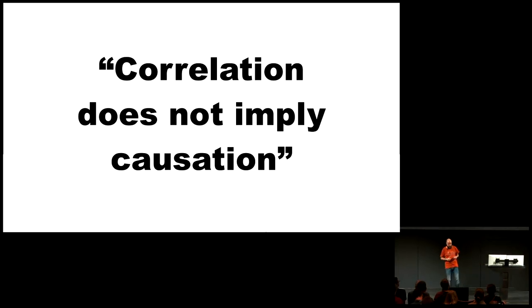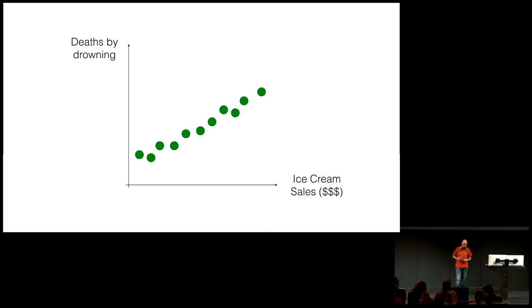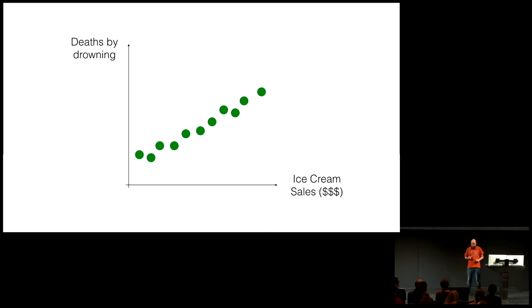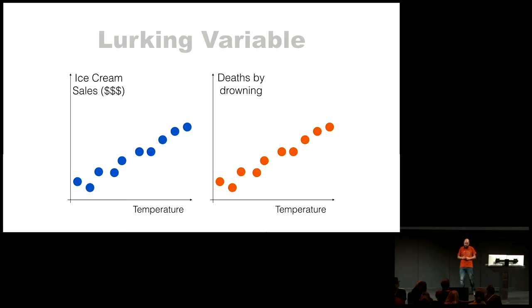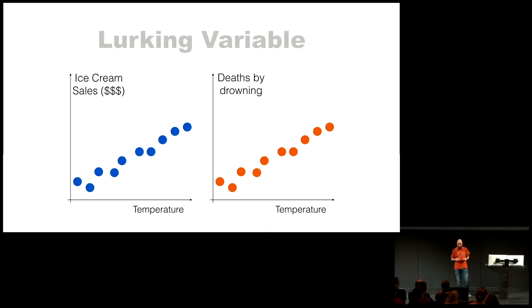So the phrase you will always find referred to is: correlation does not imply causation. For example, talking again about ice cream — the more ice cream we sell, the more people are drowning. Is ice cream really a serial killer? There is something called the lurking variable: a variable that is sort of looking at us, but we don't see it. In the case of our ice cream sales example, the lurking variable is temperature. If the temperature goes up, more people go swimming, and therefore more people potentially can die drowning — and at the same time, more ice creams are being sold.